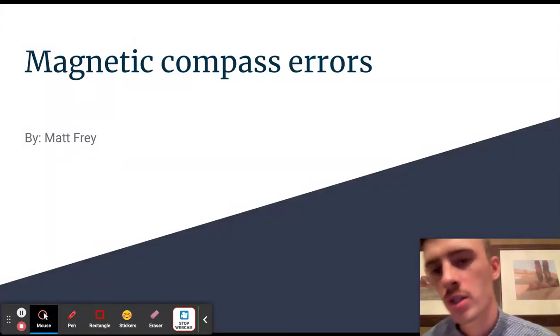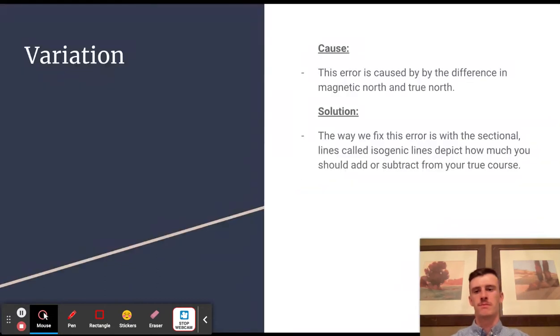Hi, this is my project Magnetic Compass Errors by Matt Fry. There are a few compass errors and they all affect the compass in different ways.